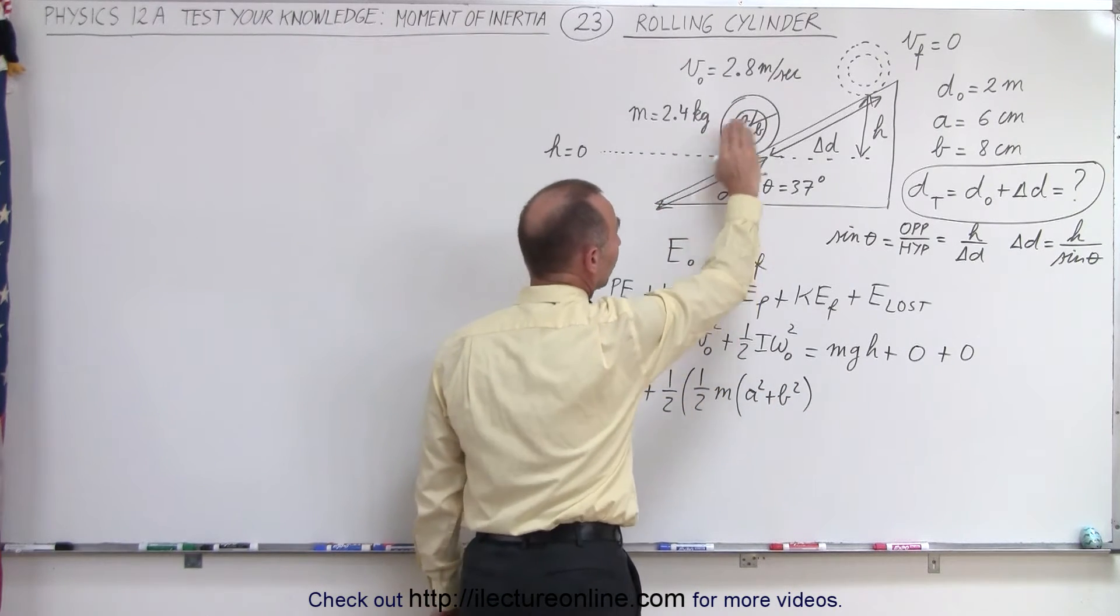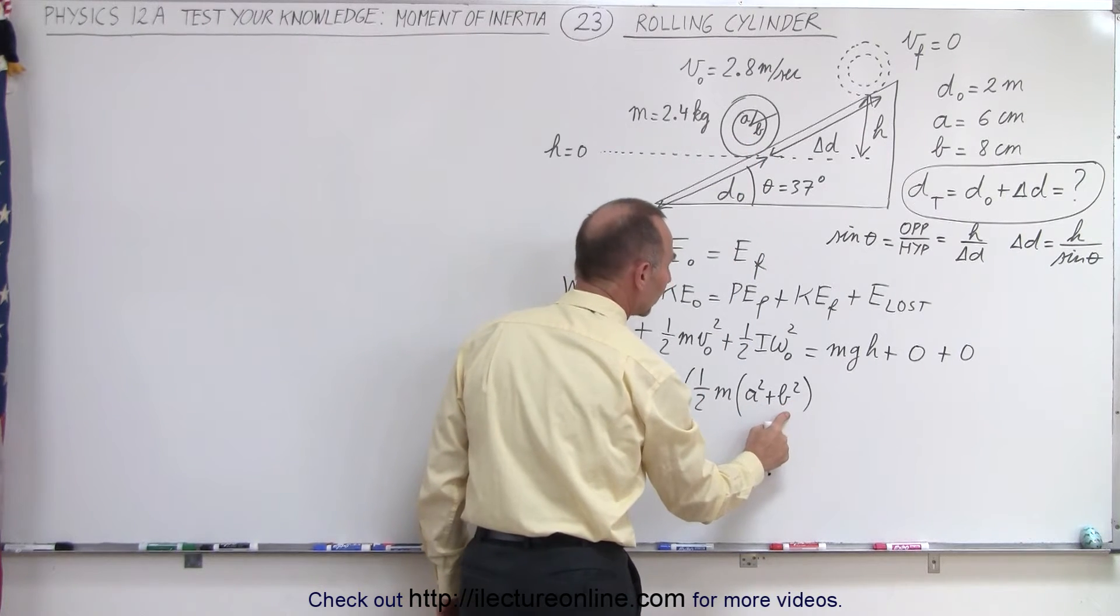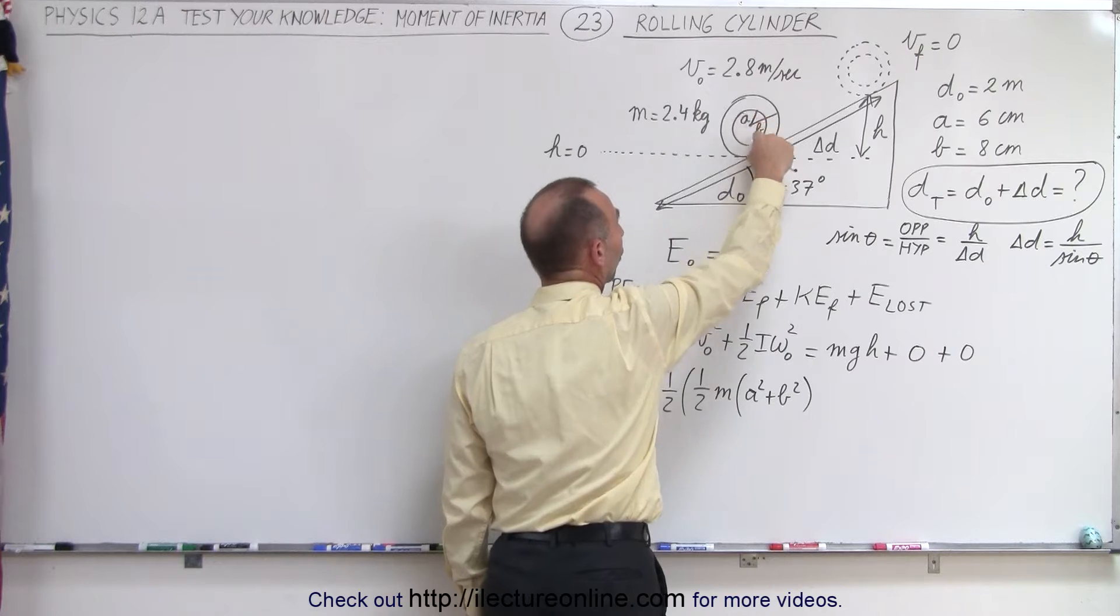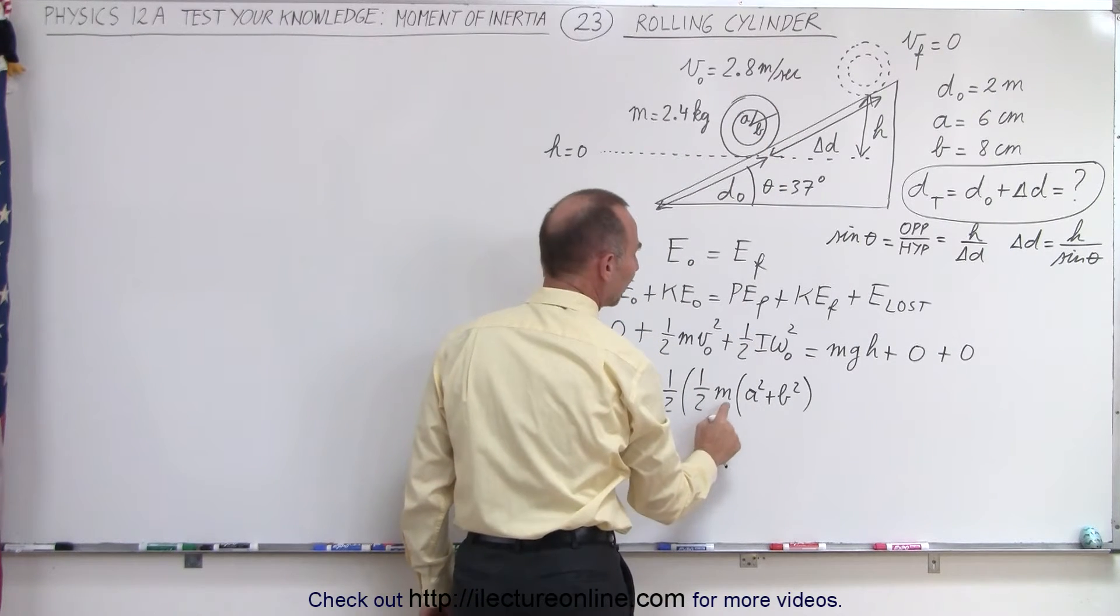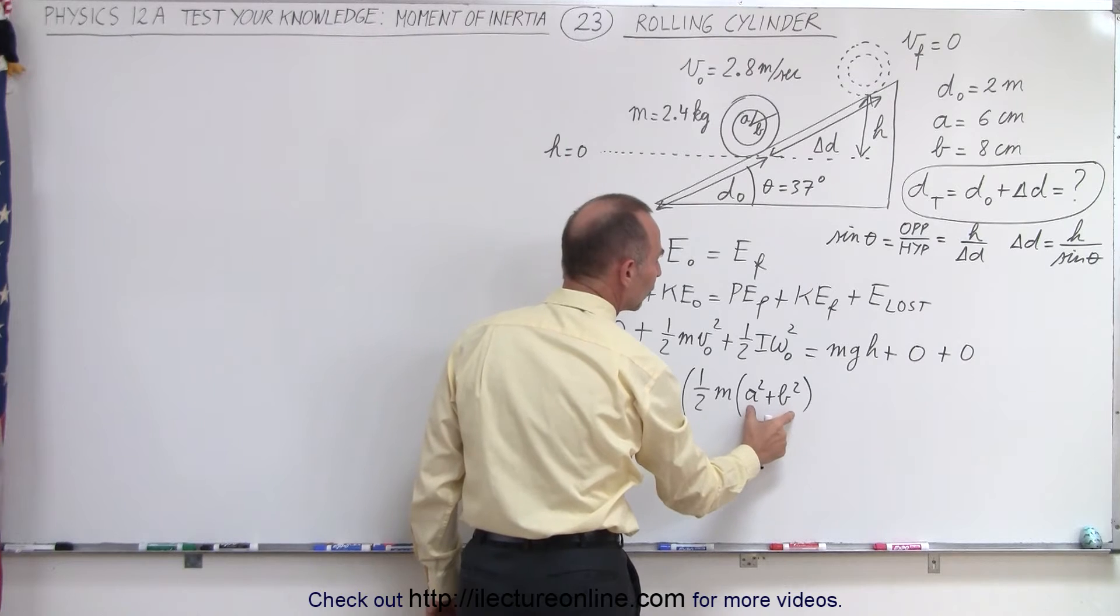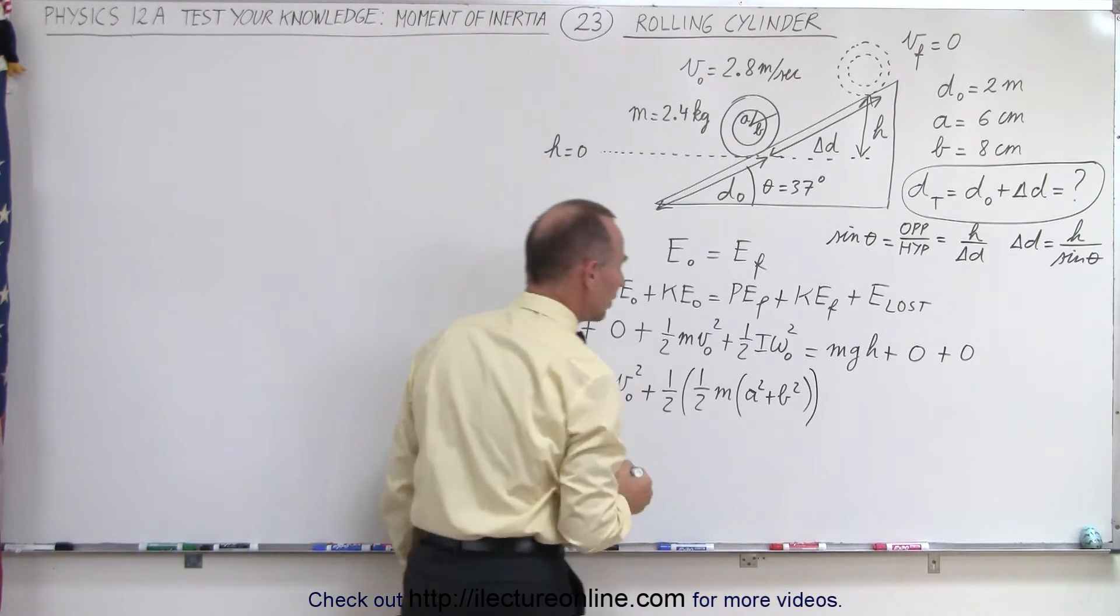so that would be one-half m times, that would be a squared plus b squared. Normally, if it was a solid cylinder, it would be one-half m times the outer radius squared. But since we have a hole in the cylinder, and we have a certain thickness, the moment of inertia will be one-half m times the inner radius squared plus the outer radius squared.